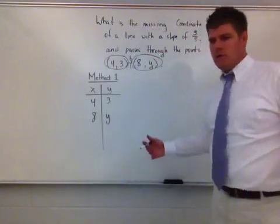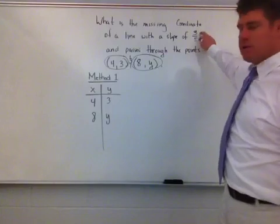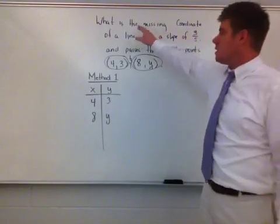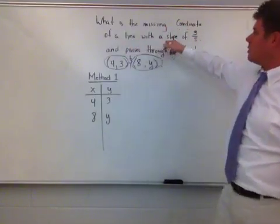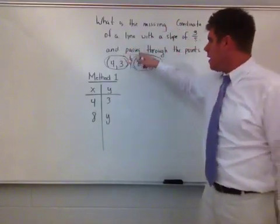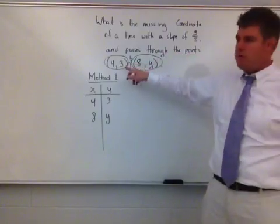So what I now need to utilize here is the fact that I know that this slope has to be 3 fifths because it's given to me in the problem. The problem is, what is the missing coordinate of a line with a slope of 3 fifths and passes through the points 4, 3, and 8, y?